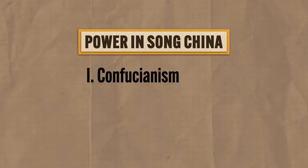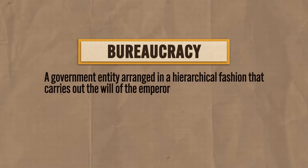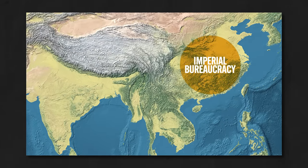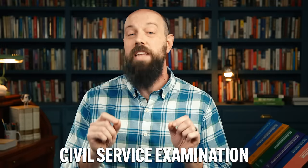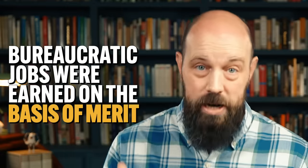The second way Song rulers maintained and justified their rule was through the expansion of the imperial bureaucracy. A bureaucracy is a government entity arranged in a hierarchical fashion that carries out the will of the emperor. The emperor makes the rules, and the bureaucracy is made up of all the folks who make sure that everyone keeps the rules. During the Song Dynasty, the imperial bureaucracy grew in scope and helped them maintain their rule. In order to get a job in the bureaucracy, eligible men had to take and pass a civil service examination, which was heavily based on Confucian classics. Bureaucratic jobs were earned on the basis of merit — the most qualified people got the jobs, not the emperor's cousin.